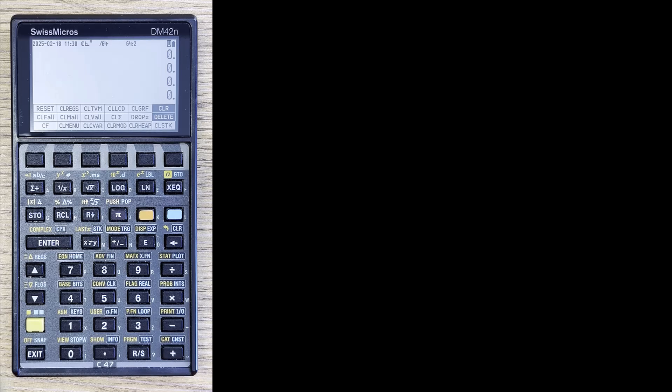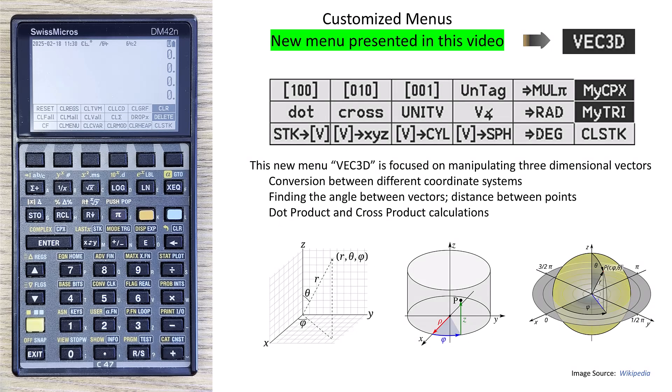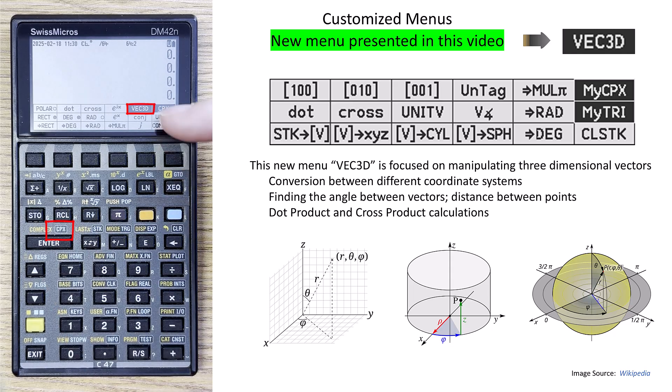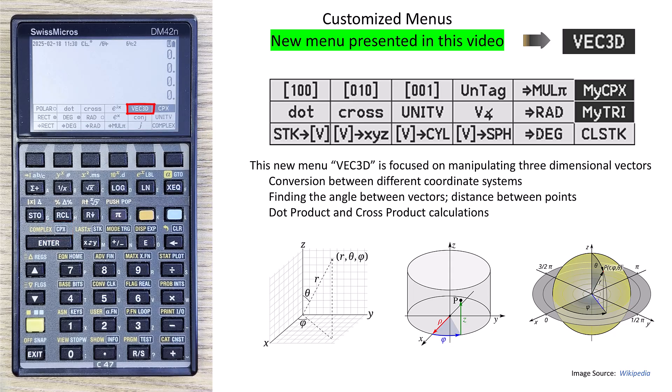But in this video, what I want to introduce is a new menu that I created called Vector3D, and this menu has a home under the complex key, so I put it up here on the G-Shift-F5 button or in the matrix menu. I also put it on G-Shift-F5 because 3D vectors are related somewhat to complex numbers and also related to matrices.